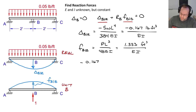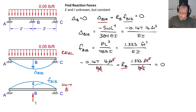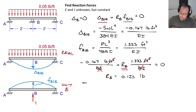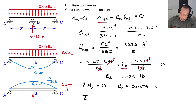Substituting into the constraint equation: negative 0.167 pound·feet³/EI plus R_B times 1.333 feet³/EI equals zero. The EI cancels since it's constant, and the feet³ cancel, leaving the result in pounds. Solving gives R_B = 0.125 pounds. Now I can apply equilibrium: sum of moments about A gives R_C = 0.0375 pounds, and sum of forces in the Y direction gives R_A = 0.0375 pounds. All reaction forces are solved.